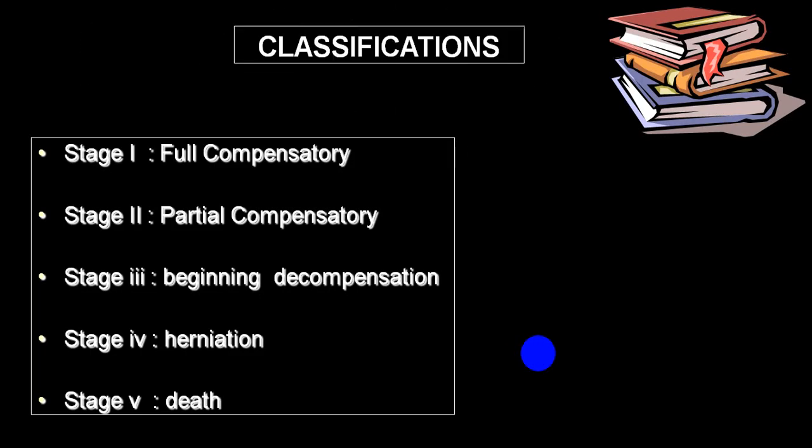Raised ICP is divided into stages 1 through 5. In stage 1, there is full compensatory mechanism. In stage 2, there is partial compensation. In stage 3, there is beginning of decompensation. Once the pressure goes above a certain level, stage 4 brings herniation. Stage 5 involves compression of the medulla, resulting in disturbances in cardiorespiratory function, and the person can die.